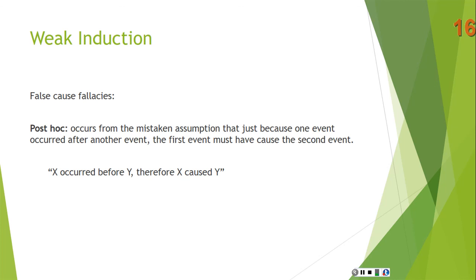Here's a silly example: 'Julius Caesar existed before me, therefore Julius Caesar is the cause of my transmission trouble in my car.' Just because Julius Caesar came before me doesn't mean he has anything to do with my car trouble. To claim that X occurred before Y, therefore X caused Y, is fallacious. The key is that you're claiming a causal relationship simply because of the temporal relationship.